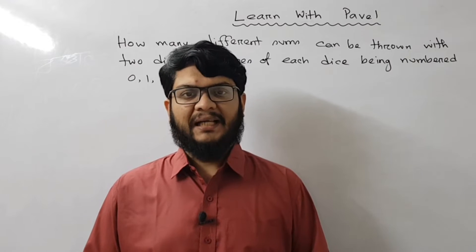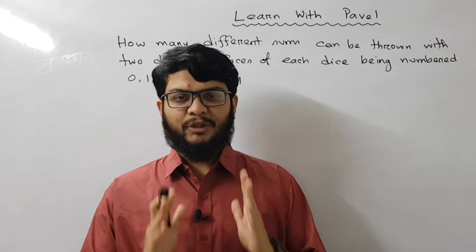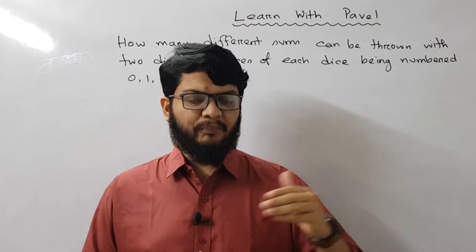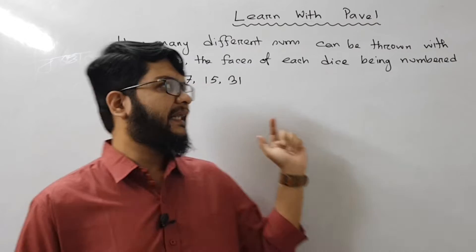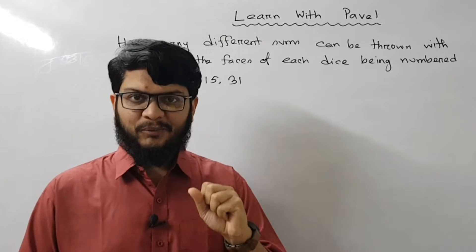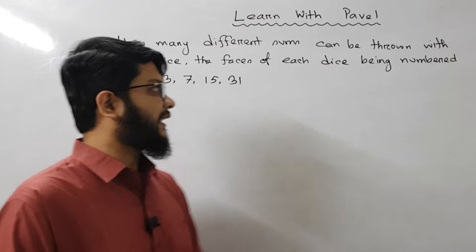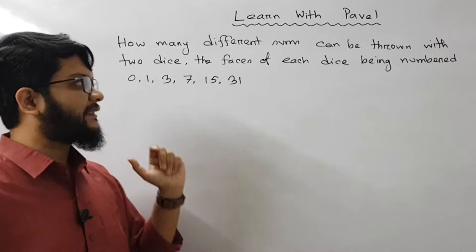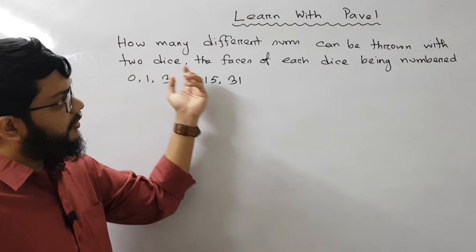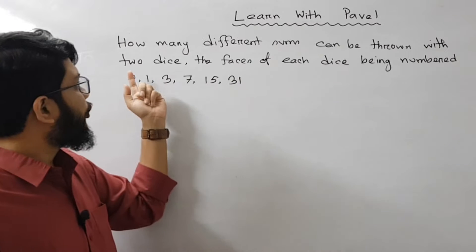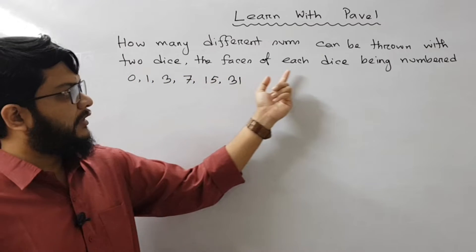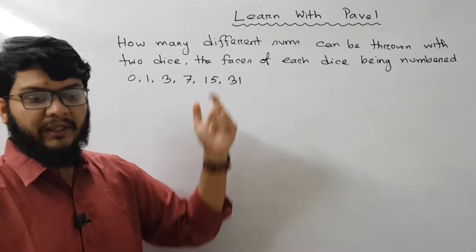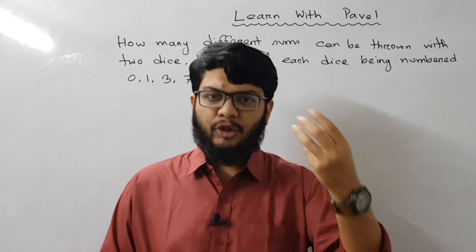Assalamualaikum. Today we will see the first problem - a primary or junior category problem. The problem statement is in English. How many different sums can be thrown with two dice? The faces of each die are numbered 0, 1, 3, 7, 15, and 31. So we will look at these two dice.